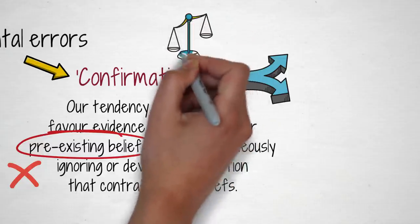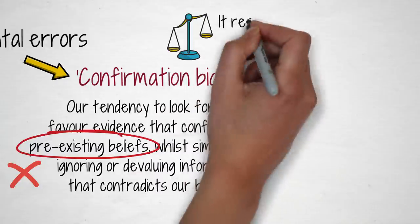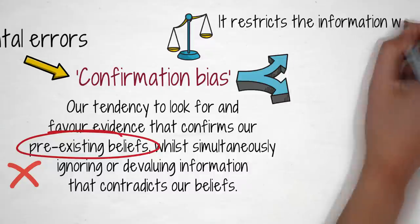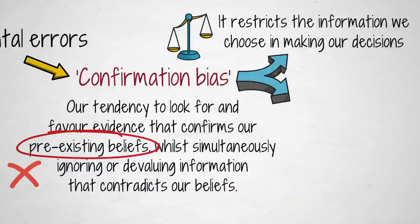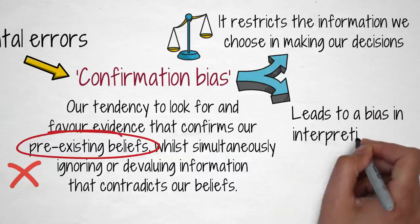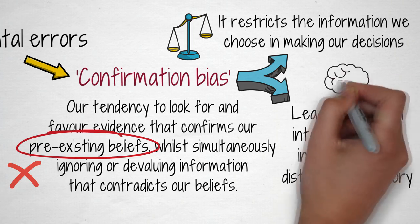I'm sure you can now see how confirmation bias affects our decision-making abilities and may lead us to making stupid mistakes. It restricts the information we choose in making our decisions. It leads to a bias in interpreting this information and distorts our memory. This is why smart people make stupid decisions.